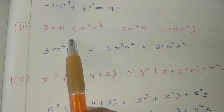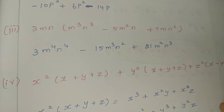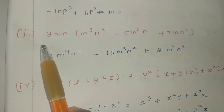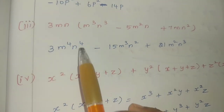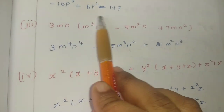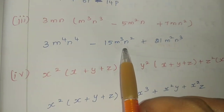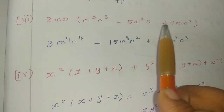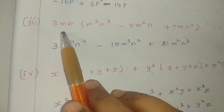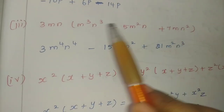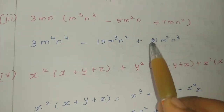Third sum: 3mn into (m cube n cube minus 5m square n plus 7mn square). Multiply 3mn into each term. First: 3 times 1, m cube into m is m power 4, n cube into n is n power 4. Next: 3 times 5 is 15, m square plus m power 1 is m cube, n plus n power 1 is n square — minus 15m cube n square. Finally: 3 times 7 is 21, m power 1 plus 1 is m square, n square plus n is n cube — plus 21m square n cube.